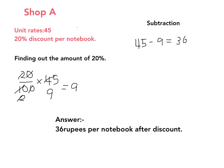For shop A, to find out the amount of 20%, the equation is 20 over 100 times 45. We cancel the two zeros, leaving 2 and 45, then cancel 2 and get 1 and 9, so it's 9. We subtract 9 from 45 and get 36. So the answer is 36 rupees per notebook after discount.